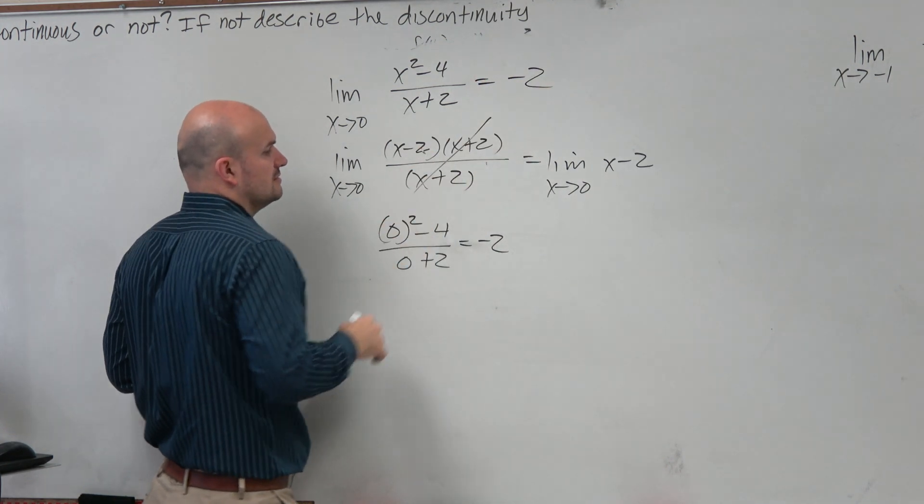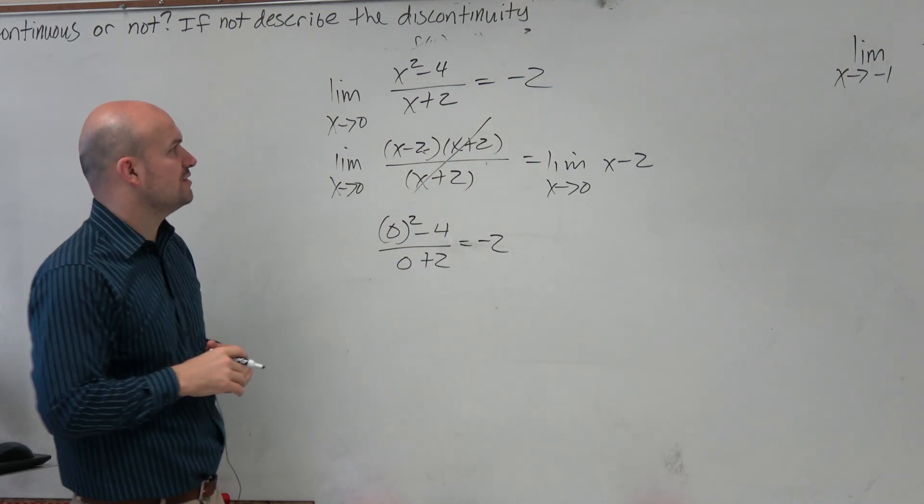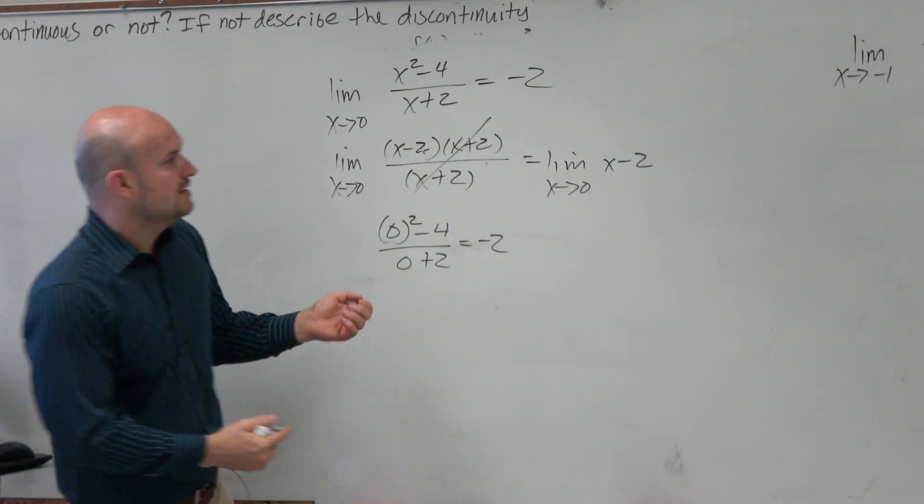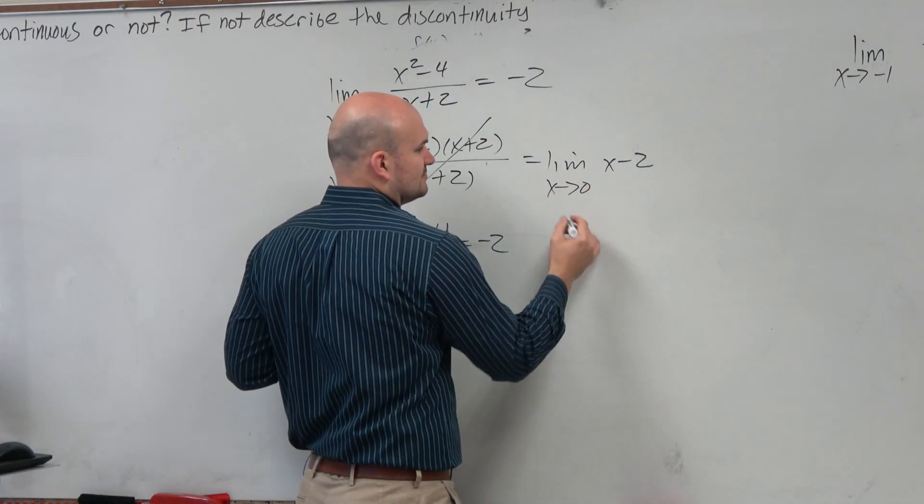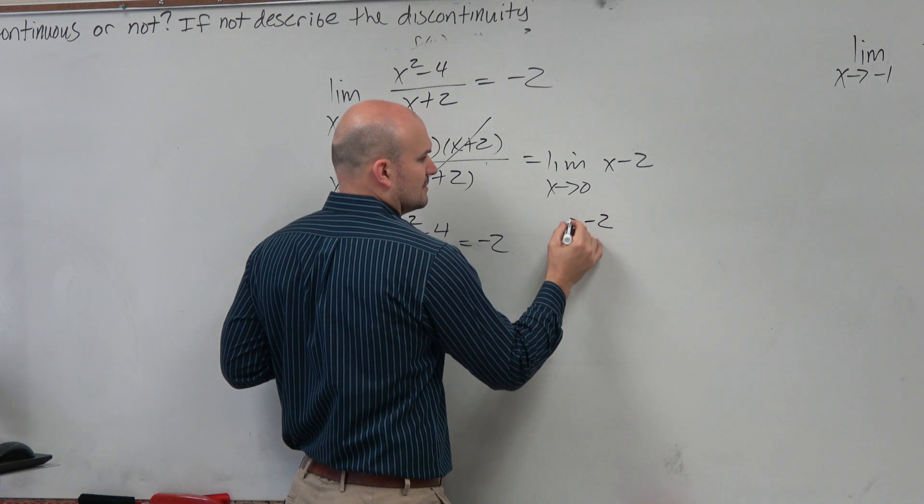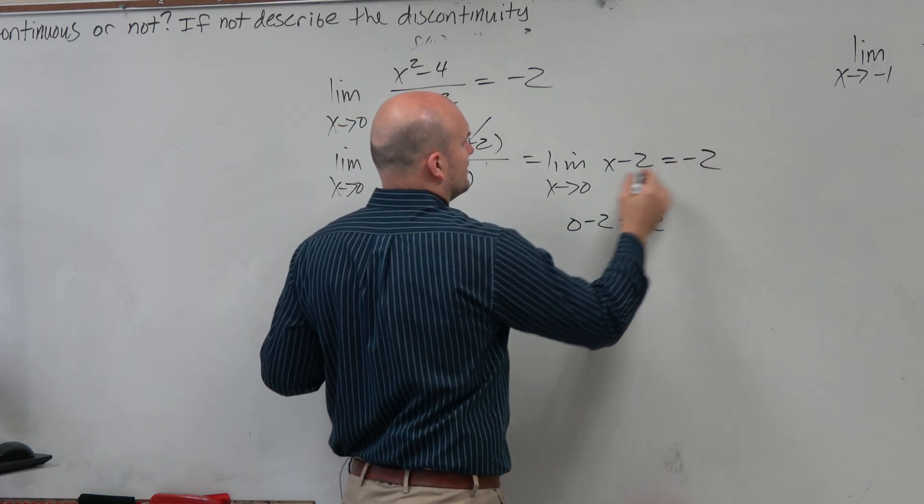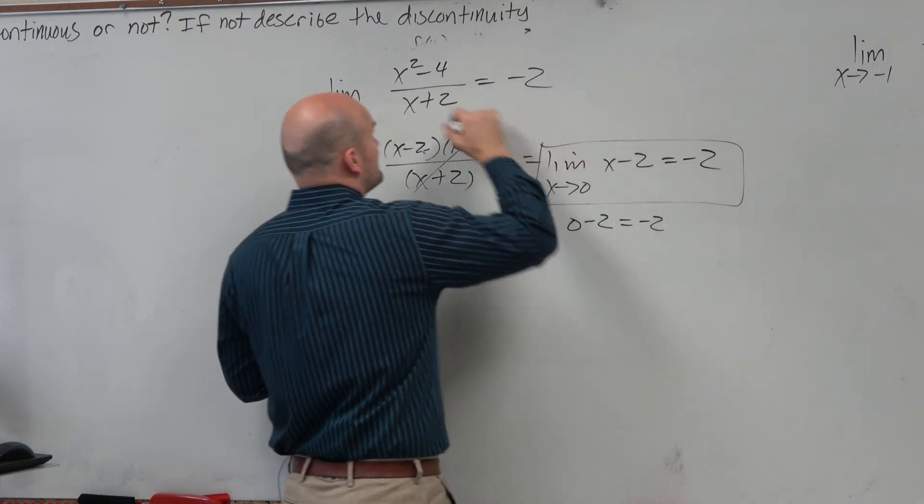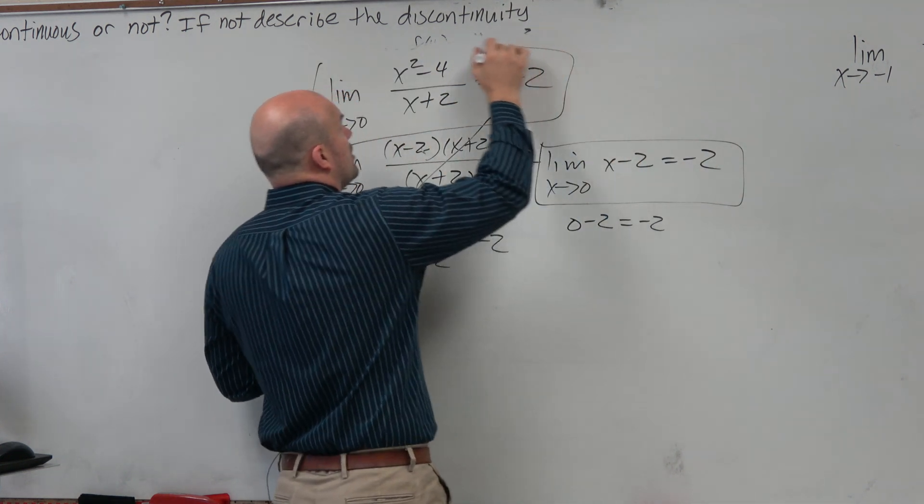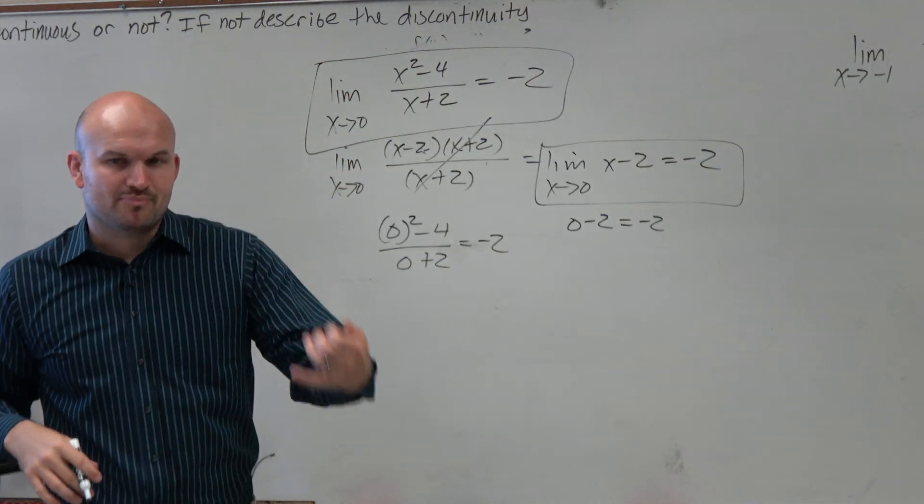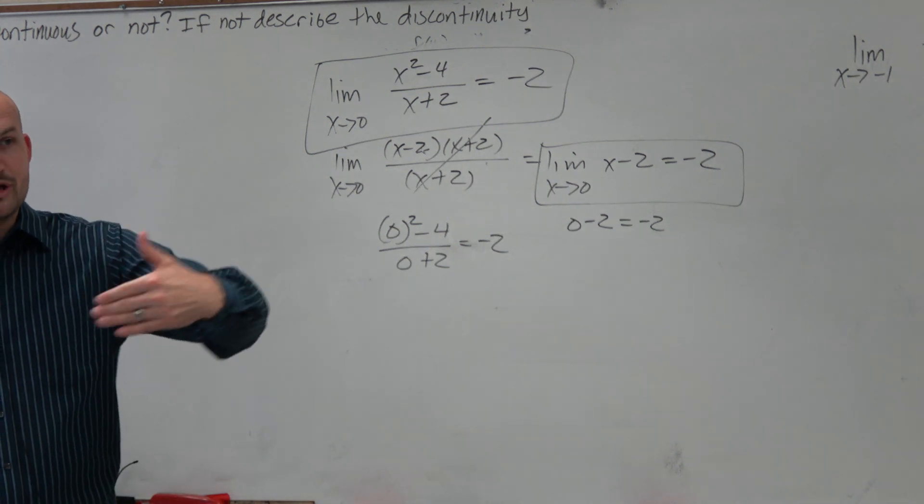So the answer, the limit of x squared minus 4 divided by x plus 2 is negative 2. Now, again, what if you did it from here? Right, so you guys can see that answer is the same as our original answer. So there's nothing wrong with simplifying it.